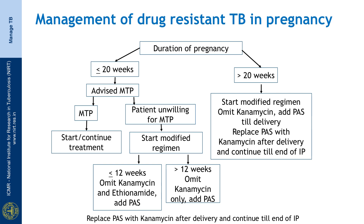But if the patient is not willing for MTP, then if the pregnancy is less than 12 weeks, we have to substitute kanamycin and ethionamide with para-aminosalicylic acid. And if it is more than 12 weeks, only kanamycin alone can be omitted and substituted with para-aminosalicylic acid. If the pregnancy is more than 20 weeks, then kanamycin can be substituted with para-aminosalicylic acid, and after delivery, kanamycin can be added back to the regimen.